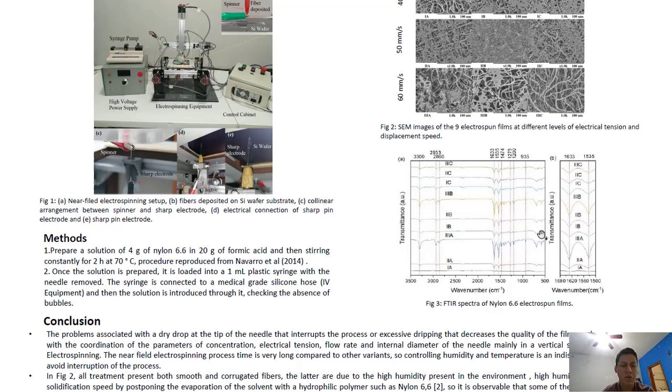There is a trend observed with more intensity peaks at 1535 and 1633 wavenumbers as the displacement speed is increased in 3A and 3B treatments.